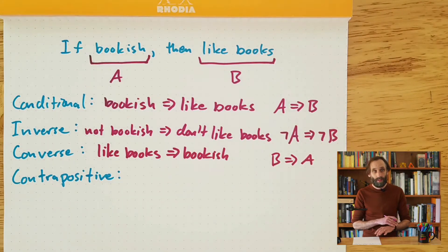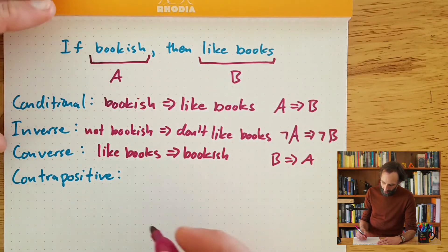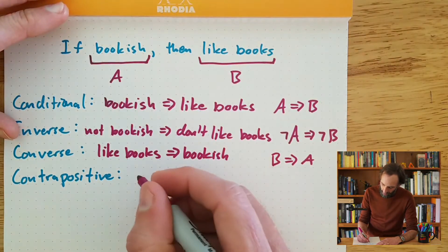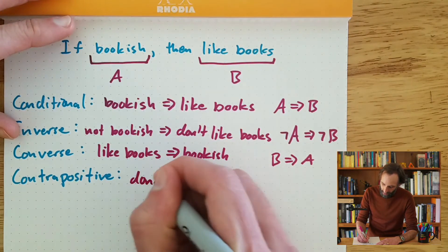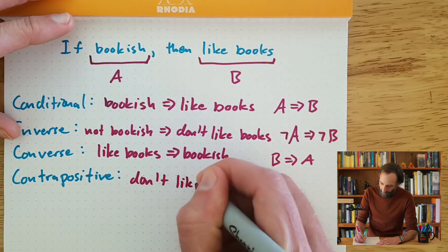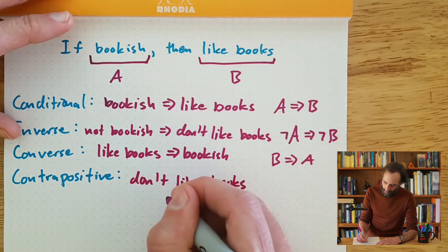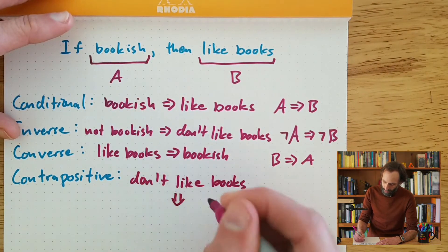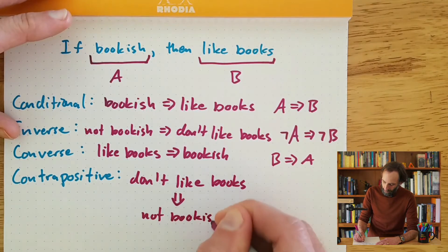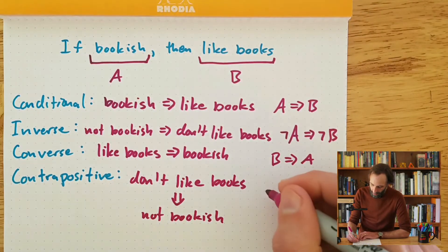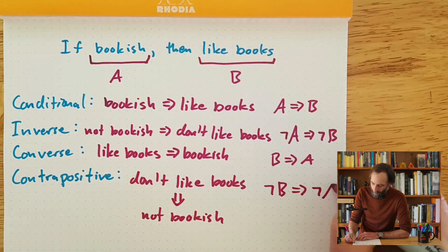And finally, the contrapositive is where we do both: change the order and negate both parts. So: don't like books implies not bookish. Symbolically, we write that as not B implies not A.